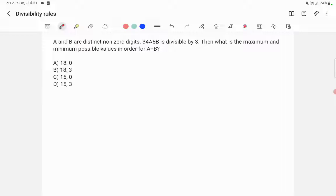So what is the divisibility rule of 3? The sum of digits will be a multiple of 3. Right. So let's take the sum of digits here.